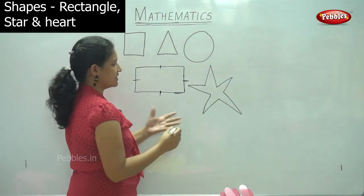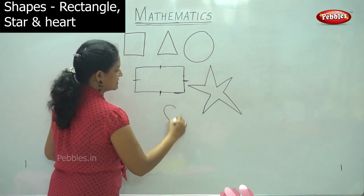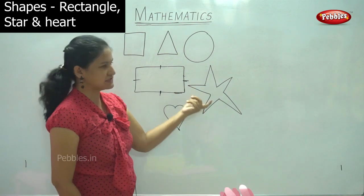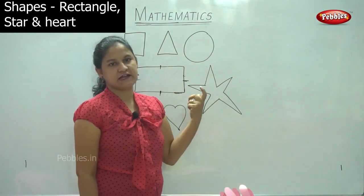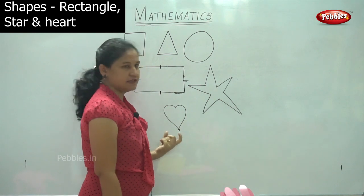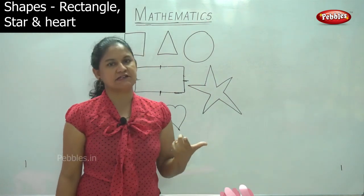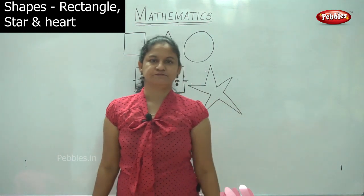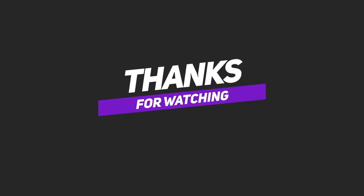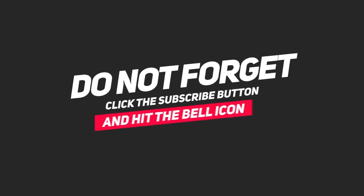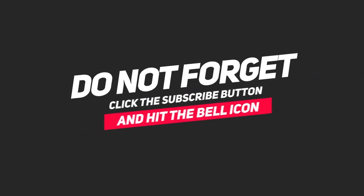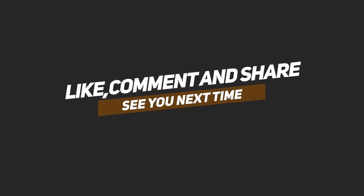These are the three shapes that we have seen today: the rectangle, which has opposite sides equal; the star, that we see in the sky at night; and the heart, that symbolizes love. I hope you have understood these three shapes. Thank you.